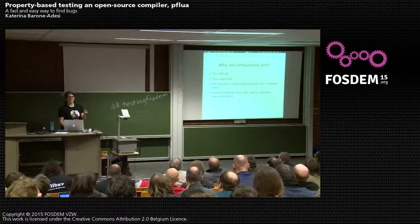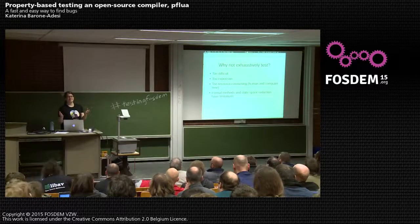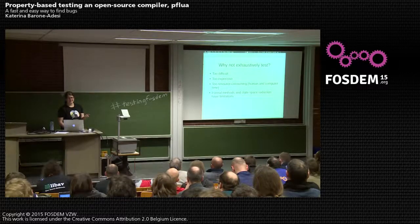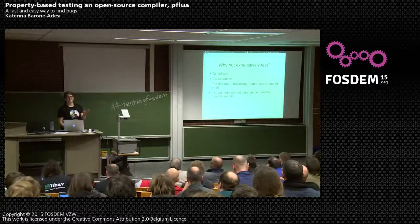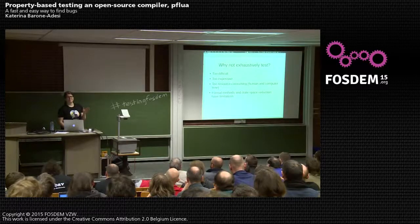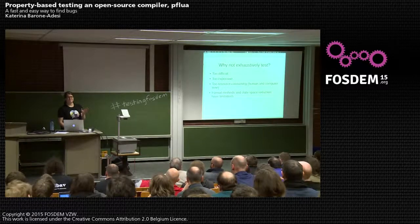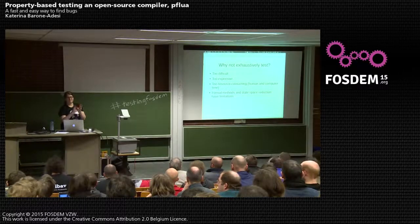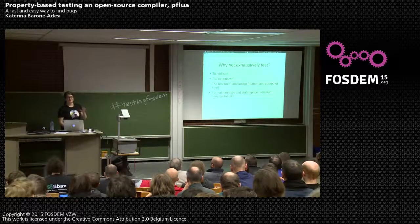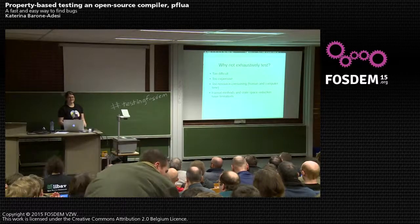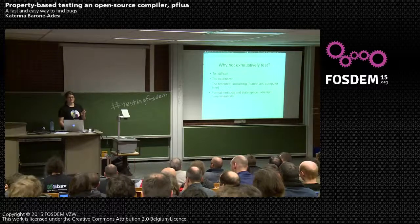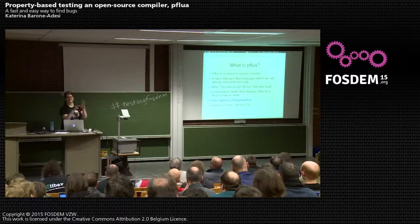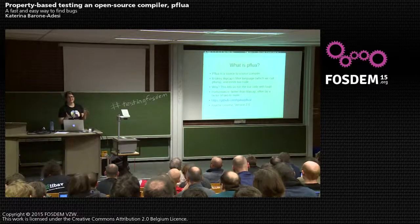You might wonder why not test exhaustively — it would be great to know your program did exactly the right thing for every single input. The problem is that basically, in general, you can't. It's too difficult and too expensive. With three 32-bit numbers you've already got 4 billion cubed possibilities. While there are formal methods research approaches to state space reduction, that's not easy to get started with and often isn't tractable for real programs. So property-based testing sits nicely in the middle: you test more than with unit tests, and you can still get started in an afternoon.